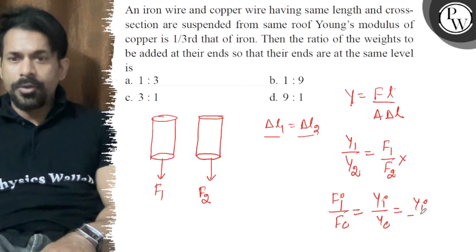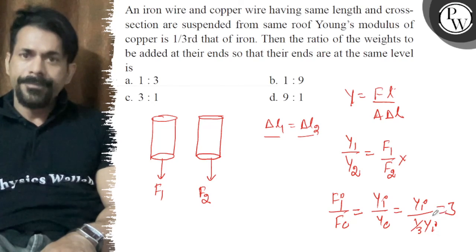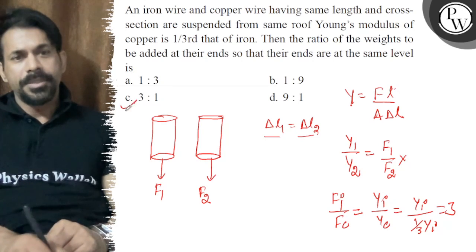Y iron and Y copper is one third of iron, so that is equal to three. So the right answer is three to one. All the best.